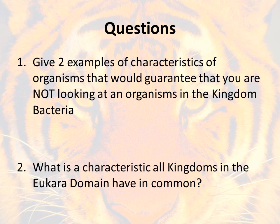Take some time and go back and look at those folders often. While you're reviewing, think about these two questions. First, can you give two examples of characteristics of organisms that would basically guarantee you are not looking at an organism in the kingdom Bacteria? Second, what is a characteristic that all kingdoms in the Eukarya domain have in common? Rewind the video as much as you need to get back to that information, then use the rest of the time to complete your Cornell notes — and don't forget to show those to your teacher when you're done.